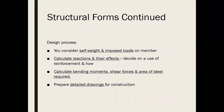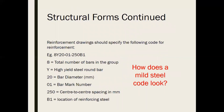The design process involves considering the self-weight and imposed load on a member, calculating reactions and their effects, calculating bending moments, shear forces, and the area of steel required, and preparing a detailed drawing. A typical steel notation looks like 8Y20-01-250V1. Structural engineers and site personnel know this code by heart, so you need to study it.